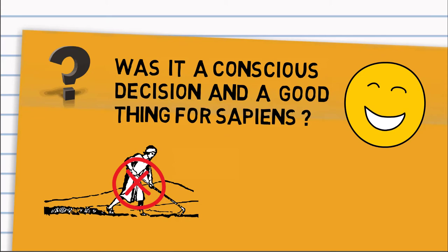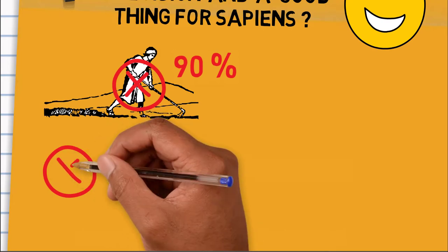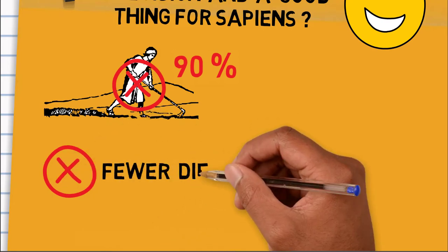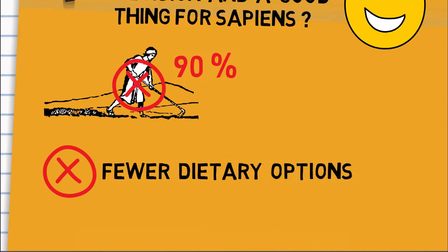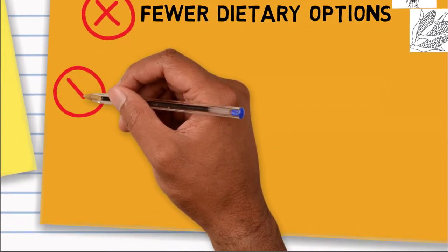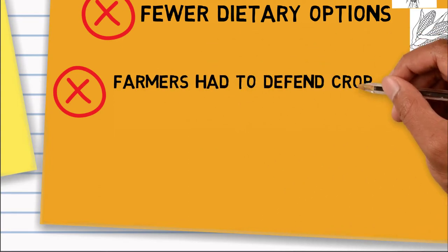It wasn't necessarily a good thing. Ninety percent of the people were doing backbreaking work, and it limited the diet, where there were fewer dietary options now with so much dependency on just the wheat and items they could plant, and the animals they could domesticate.